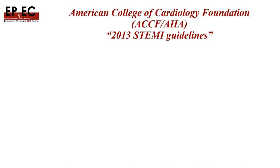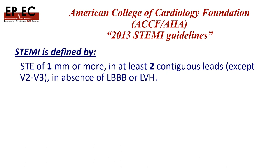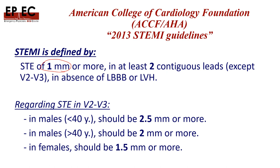Let's go through guidelines from different countries to see if the STEMI definition is the same or different. The American College of Cardiology Foundation and American Heart Association guidelines from 2013 define STEMI as one millimeter or more anywhere in the ECG except V2 and V3, requiring two contiguous leads, in the absence of left bundle branch block or LVH. For V2 and V3: in males under 40 years, up to 2.5 millimeters is allowed; in males over 40, up to two millimeters; and in females regardless of age, 1.5 millimeters.